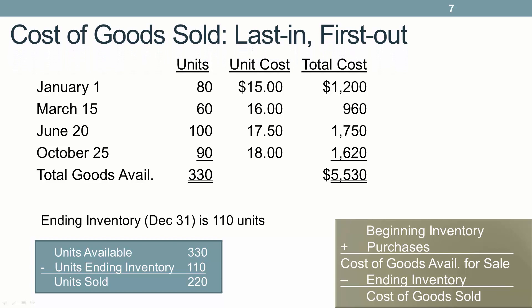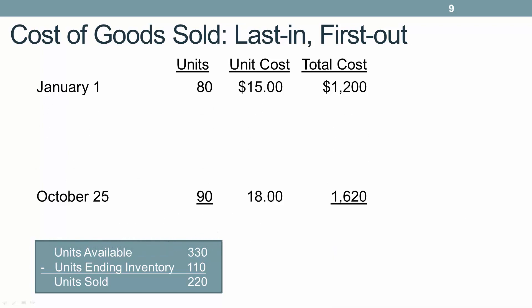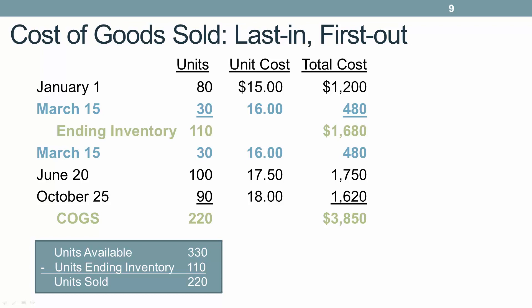Under last in first out, we still have the same 220 units sold and the same formula, but we start with the most recent purchase, assuming the last ones purchased are the first ones sold. For cost of goods sold, we include all of our October 25 purchase, all of our June 20 purchase, and only 30 units from March 15 — we can't include all 60 units, as that would exceed 220 units. This gives us 220 units sold at a total cost of $3,850. Our remaining March units and all January units are included in ending inventory, with a total cost of $1,680.